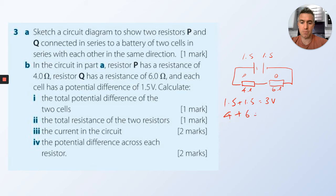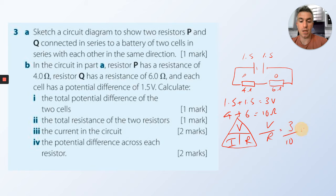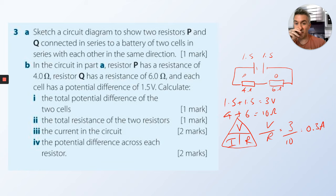The total resistance of the two resistors is 4 plus 6, that's 10 ohms. The current in the circuit — the equation is V = IR, we want current, so we do V over R, which is 3 divided by 10, giving 0.3 amps.